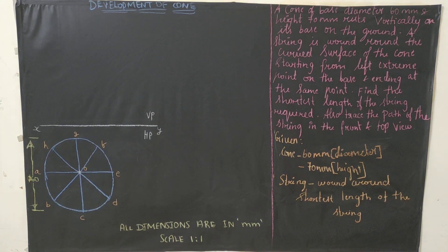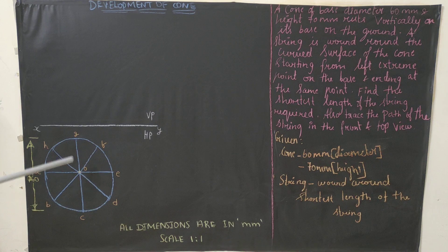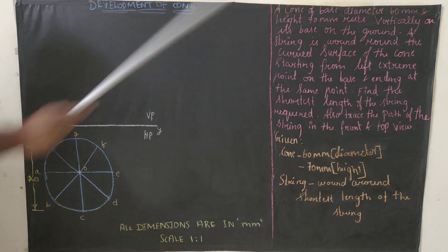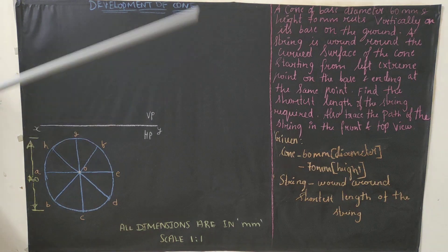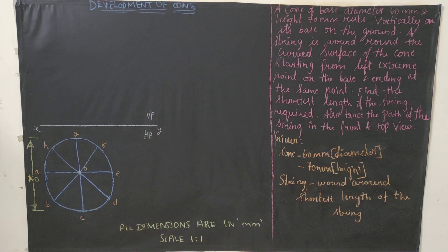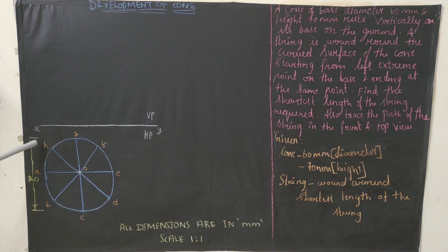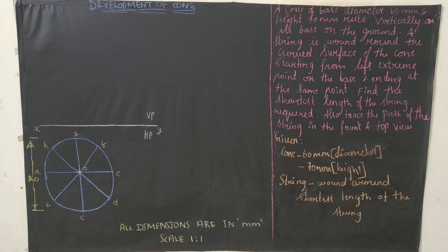The first step is to draw the base diagram in top view. Draw a reference line and mark it as XY, VP, HP. Since the diameter is 60 mm, the radius is 30 mm. Measure 30 mm in your compass, keep the center here, and draw the circle neatly. Divide the circle into 8 equal parts, naming them A, B, C, D, E, F, G, H. Dimension using 2H pencil for extension lines, H pencil for dimension lines, and HB pencil for arrowheads.